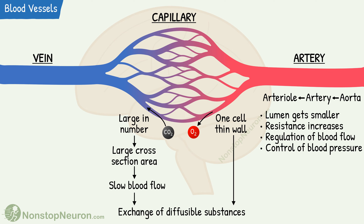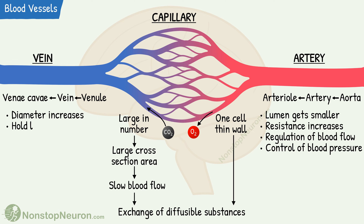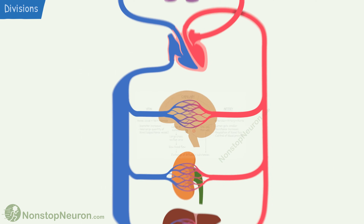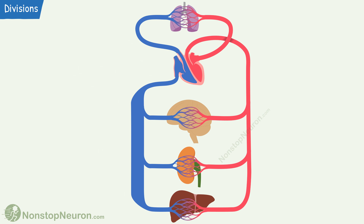From capillaries, the venous system starts. It includes venules, veins and venae cavae. As we go from the capillaries to the heart, the diameter of veins increases. Veins hold a large quantity of blood and hence they are also called capacitance vessels. As this video is just for introduction, I have kept the details minimum. For more details, watch the separate video on the physical properties of blood vessels.